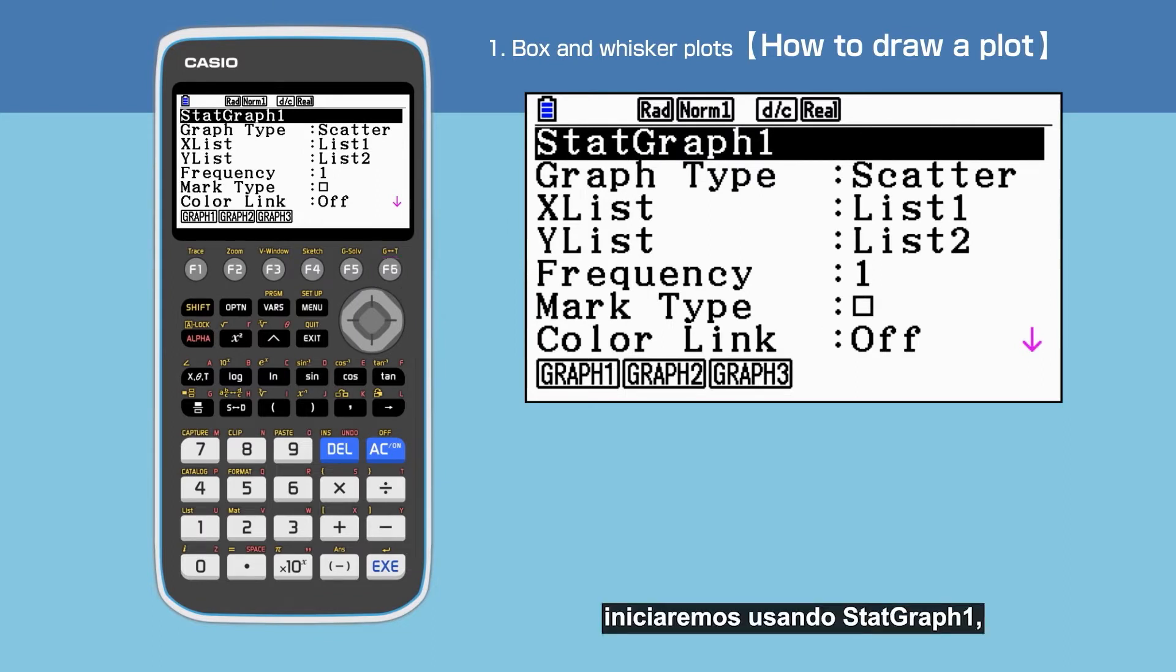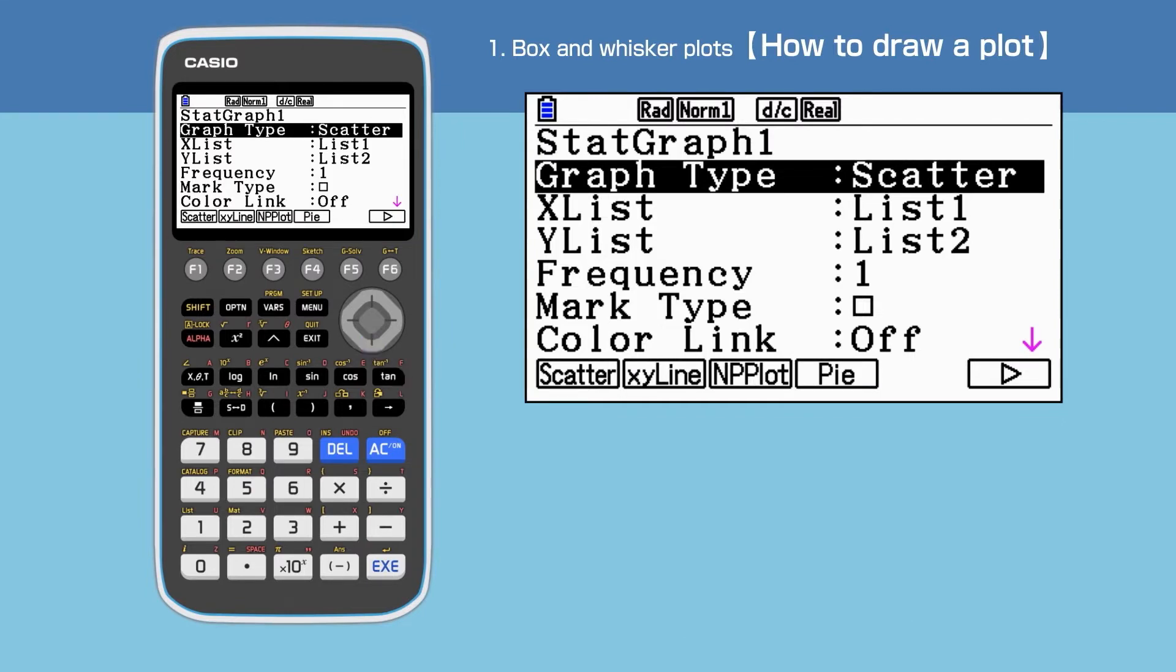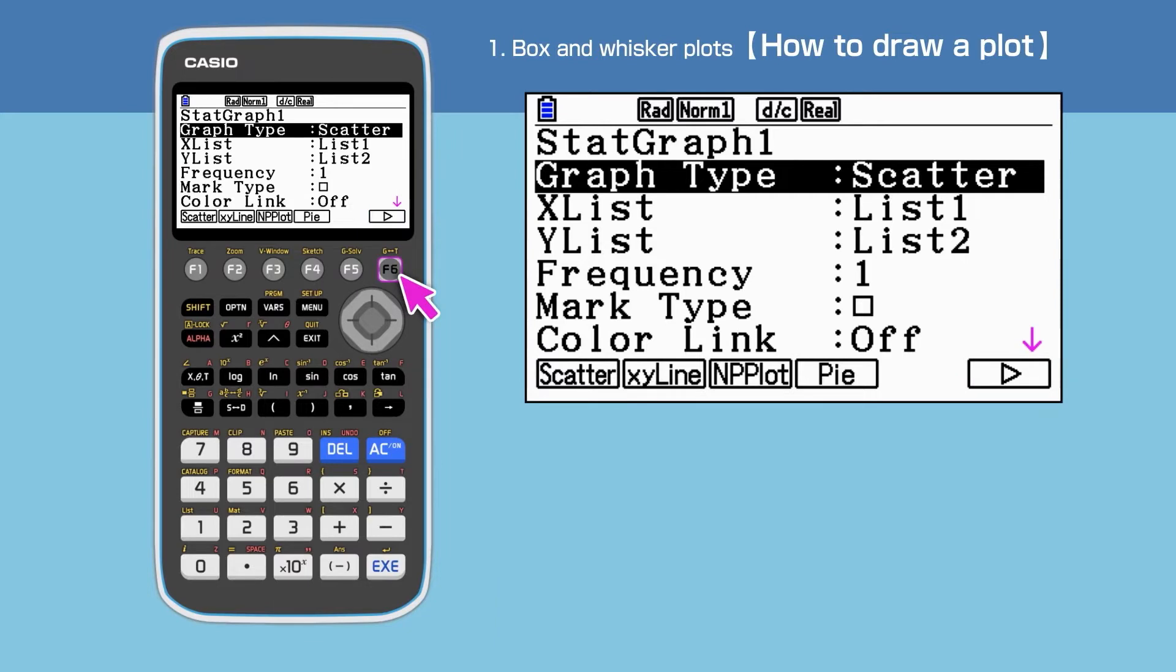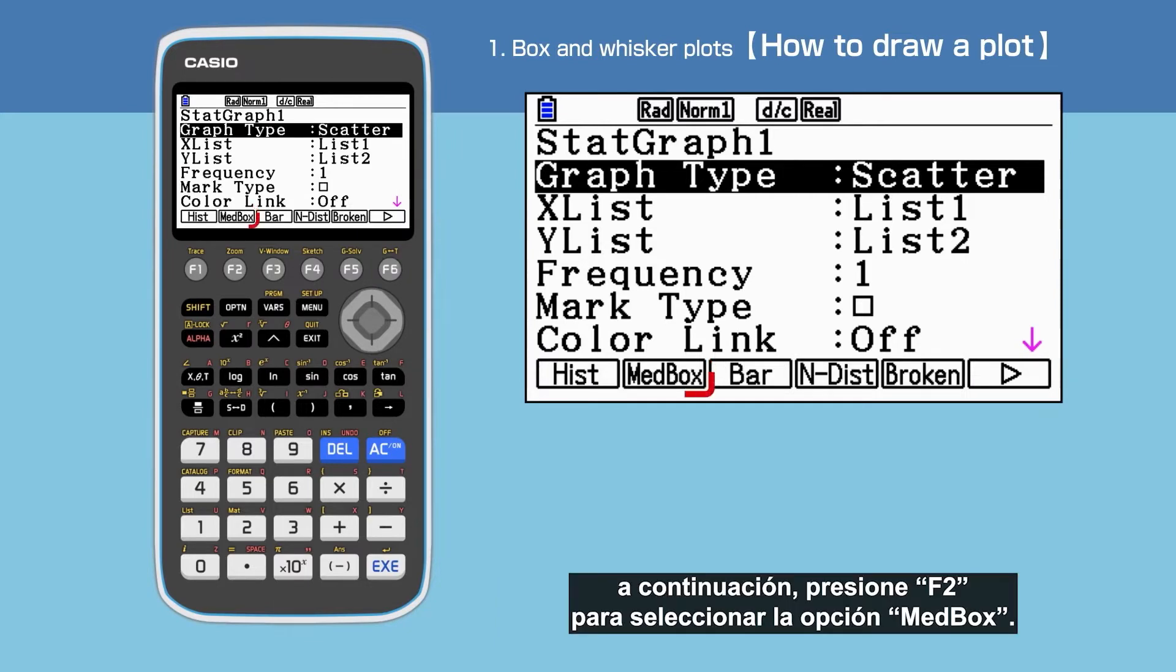We will be using Stat Graph 1 here. Highlight Graph Type. Press F6 to go to the next command menu. Then press F2 to select MedBox. Press F6.